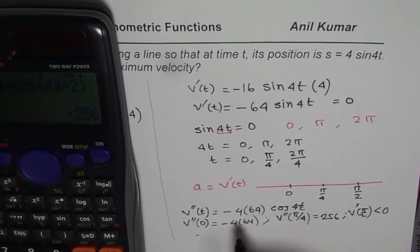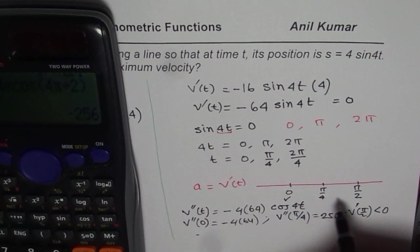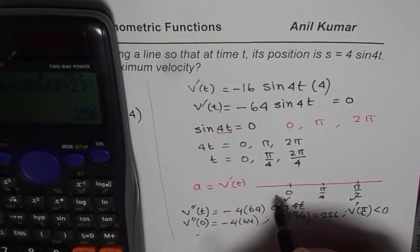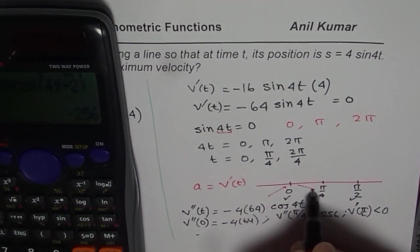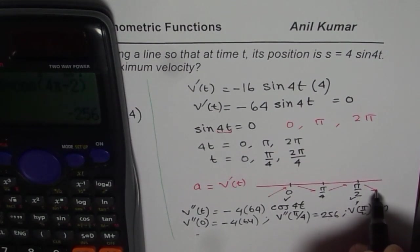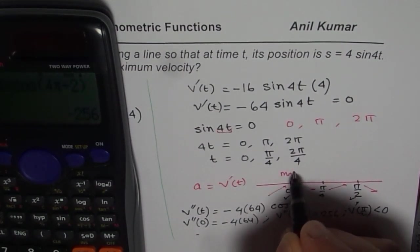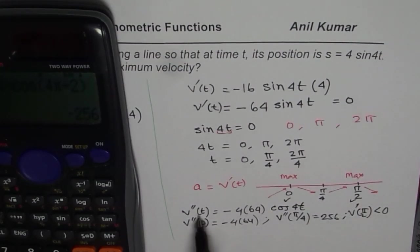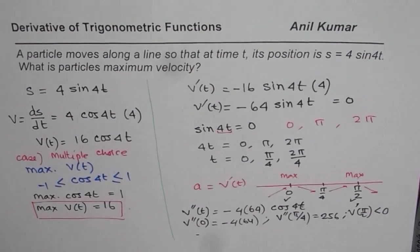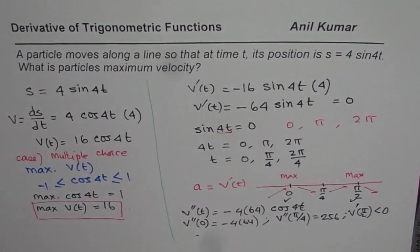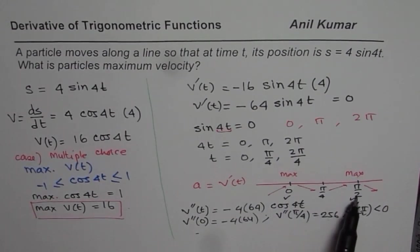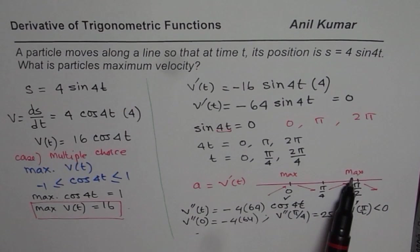So we have maximum for t equals to 0 and t equals to pi by 2. If you test this out, you'll get the variation like this. So we get at 0 or at pi by 2, the maximum.